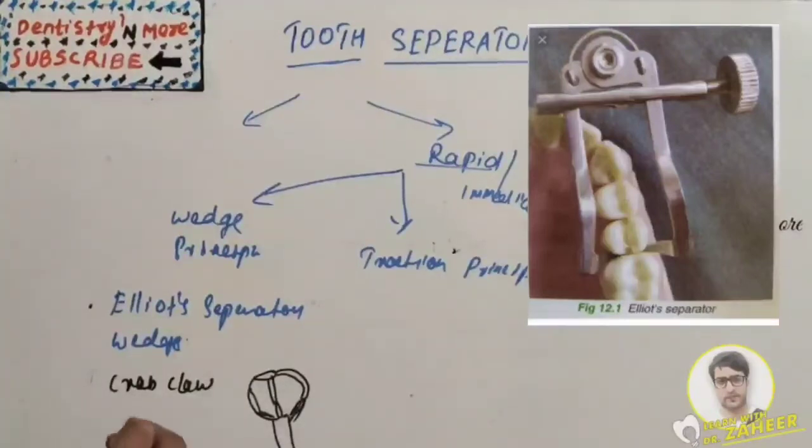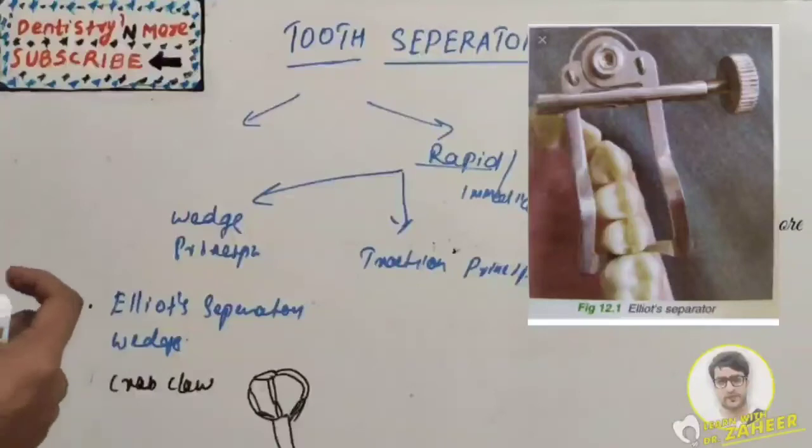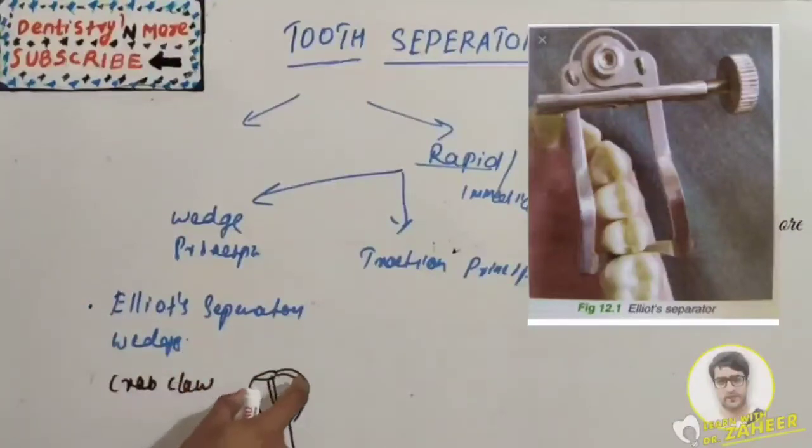Clockwise rotation of the tightening screw moves the contacting teeth apart. These two will be engaging on the teeth, so if you do clockwise rotation, this will move the contacting teeth apart.